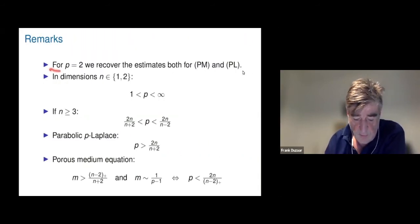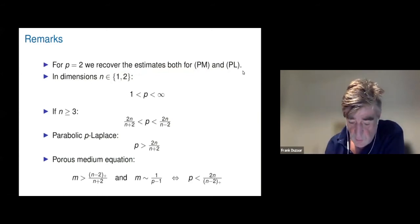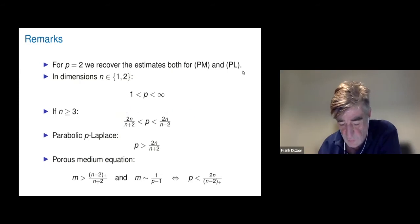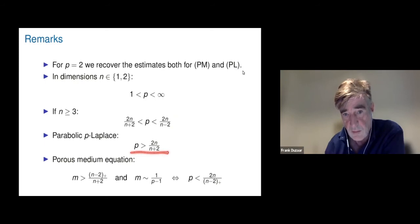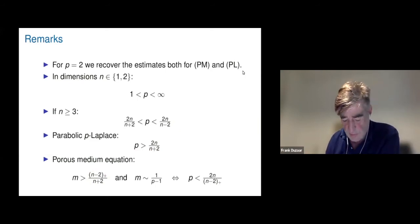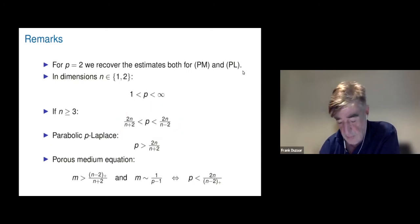For p = 2, we recover the estimates for both the porous medium and the parabolic p-Laplacian. In dimensions n = 1 and 2 we cover the whole range of exponents. For n > 2 we have two bounds — we actually know one of the bounds can be removed, but it is not clear whether the remaining bound is sharp. The parabolic p-Laplacian gives higher integrability for p > 2n/(n+2), and the porous medium gives the bound m > (n−2)_+/(n+2), corresponding via m = 1/(p−1) to p < 2n/(n−2)_+.